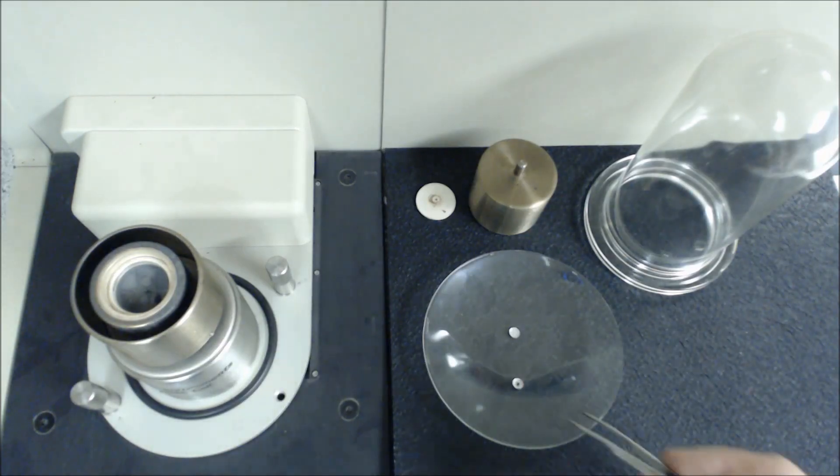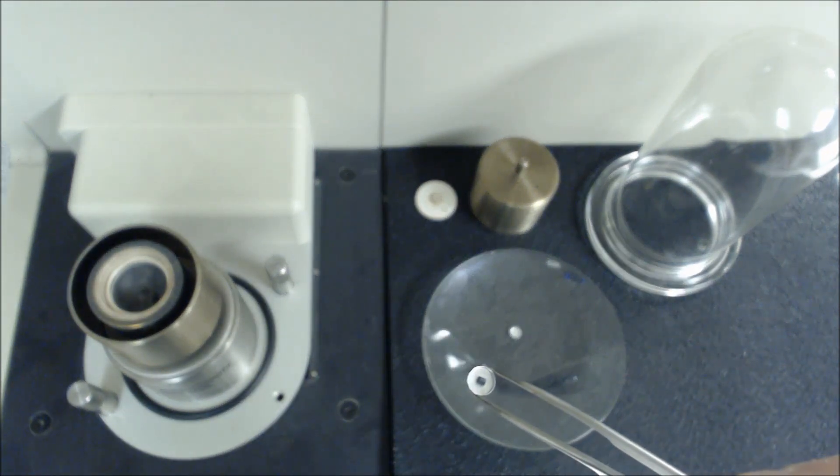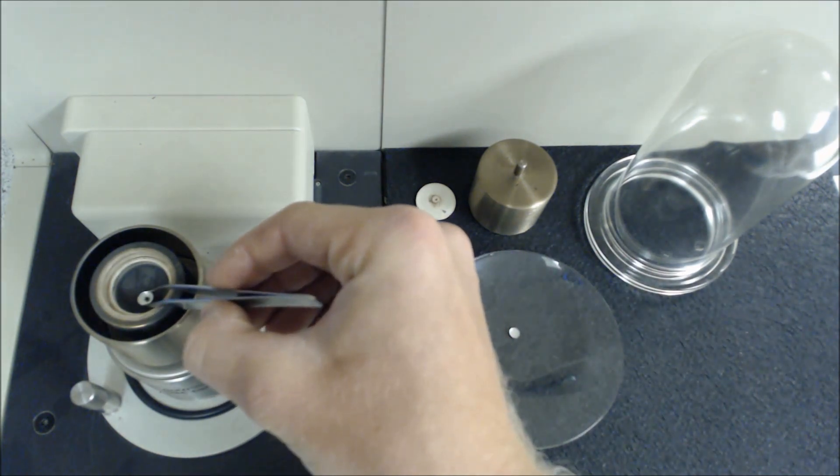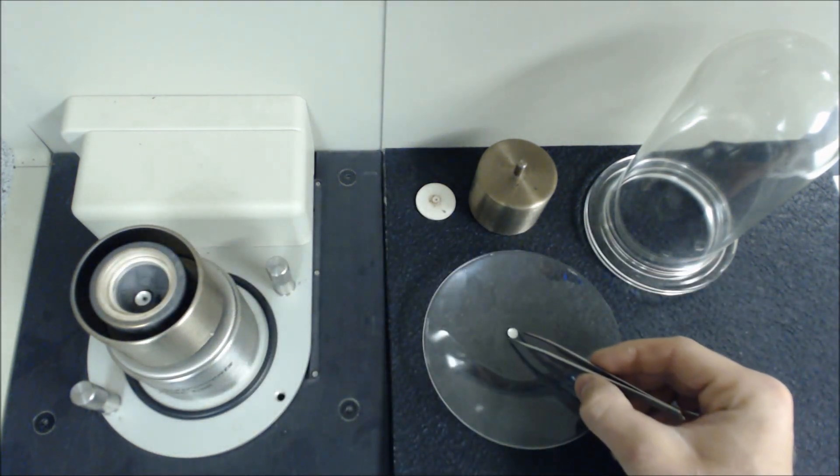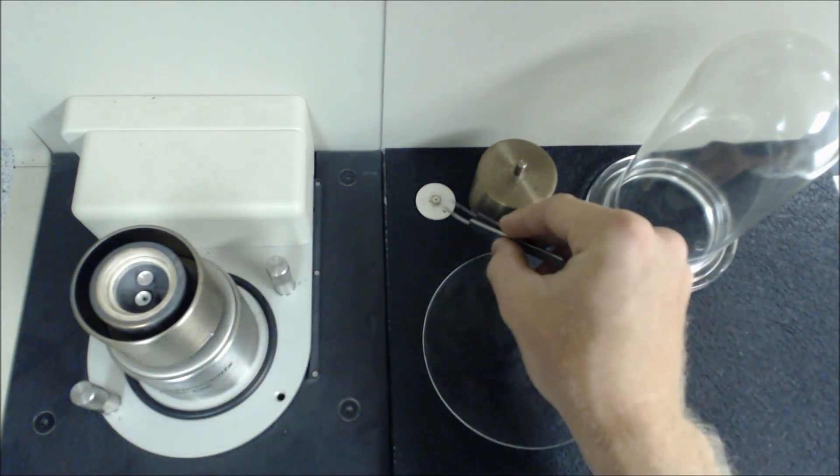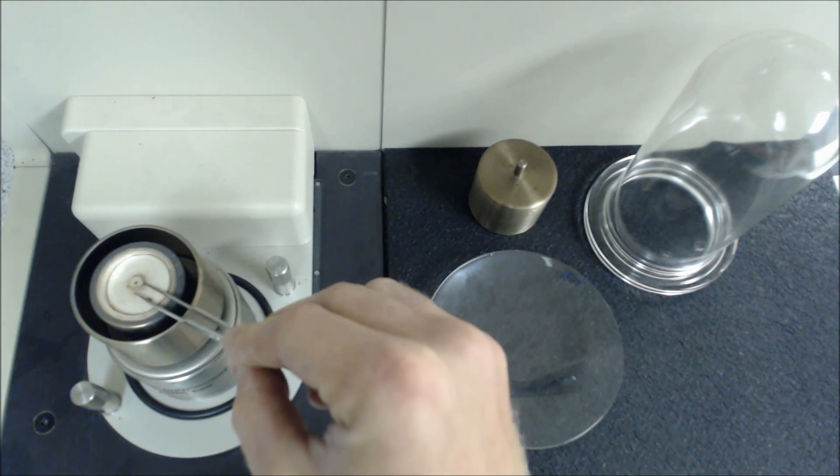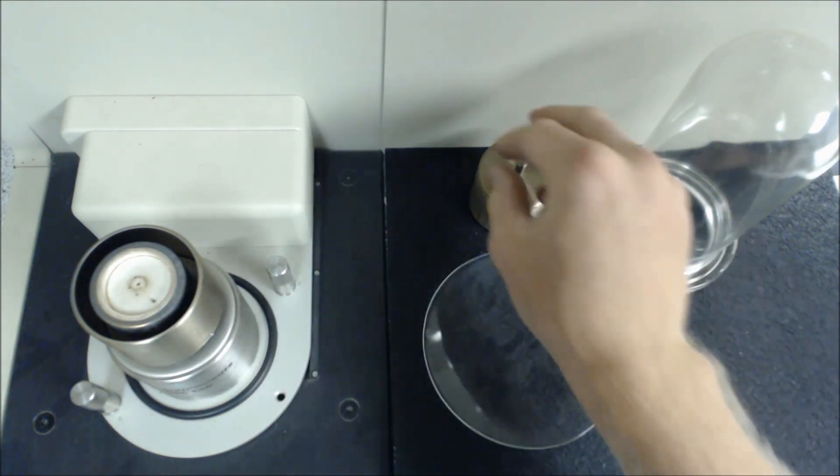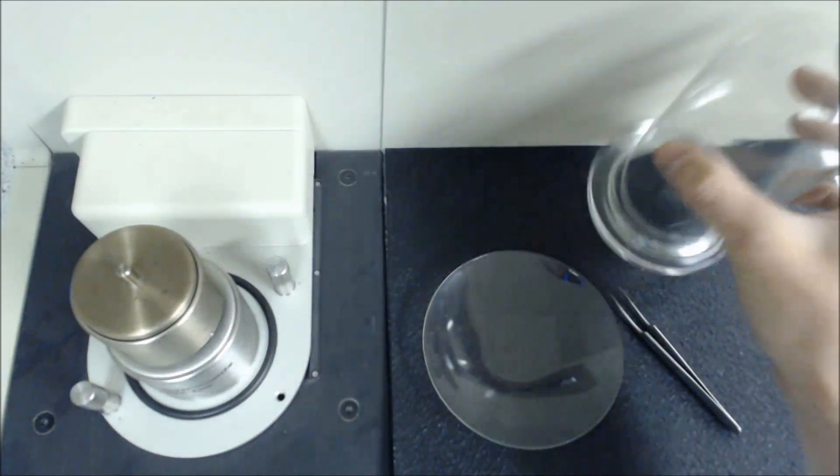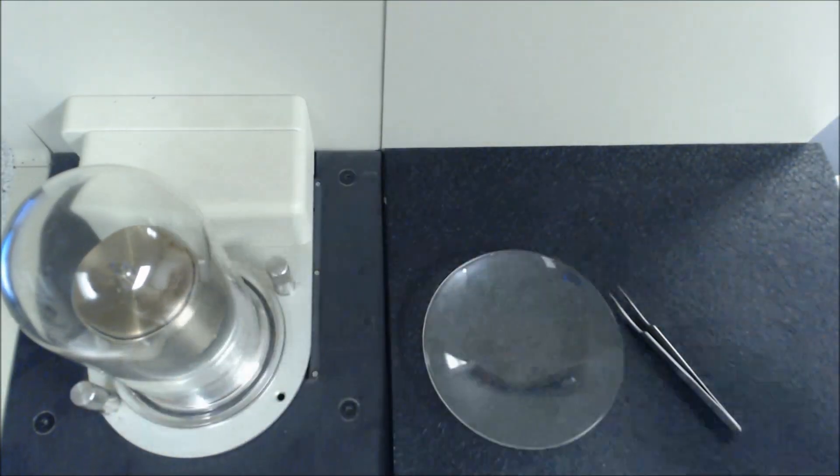To load the sample pan into the DSC, first we pick it up with a pair of tweezers and very carefully place our sample pan onto the front scale of the DSC cell. Then we take a reference pan which is of the same mass as the sample pan but empty and place that onto the rear scale. Then we take our thermal lid, place that on top. Now we're going to take the metal shield and place that on top of there. Now we take the glass dome which traps the gas within the DSC cell and place it on top making sure you have an airtight seal.